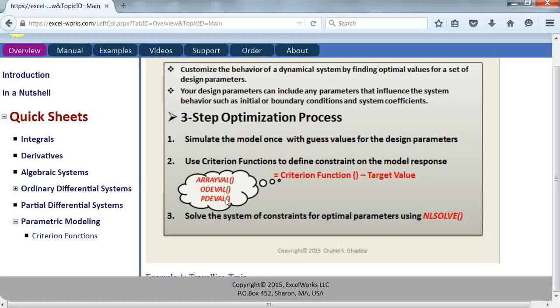We have three criterion functions that we can use. The last two are similar. One of them applies to ordinary differential systems and the last one for partial differential systems. We're going to spend a little time to understand how these functions work and how you can use them effectively to impose constraints on the system response.